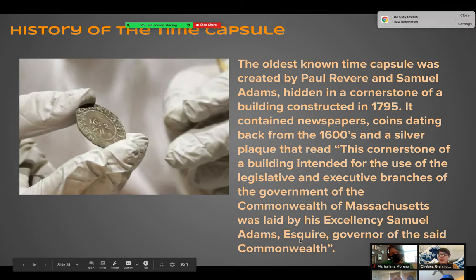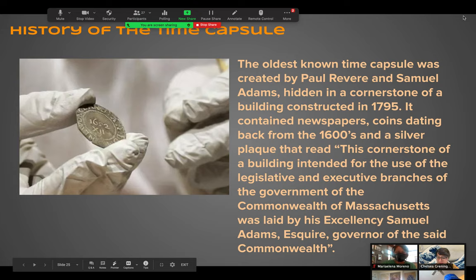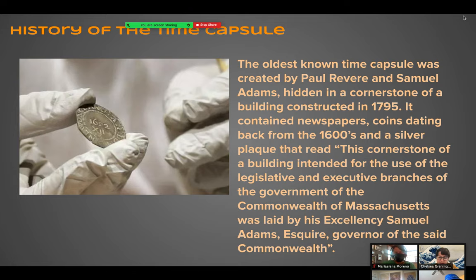The oldest known capsule was created by Paul Revere and Samuel Adams, hidden in a cornerstone of a building constructed in 1795. It contained newspapers, coins dating back from the 1600s, and a silver plaque that read: 'This cornerstone of a building intended for the use of the legislative and executive branches of the government of the Commonwealth of Massachusetts was laid by His Excellency Samuel Adams Esquire, Governor.' That cracks me up — how many different titles do you need for yourself? Excellency, Esquire, Governor.